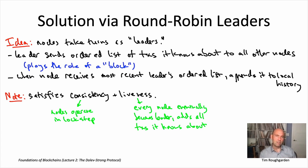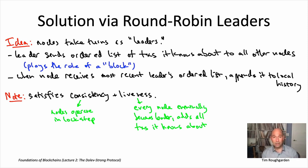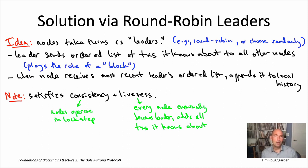In that argument for liveness, that's the point where we really needed there to be a rotating leader. Because maybe not all nodes have heard about a transaction, so we need to take turns so that the node that knows about a transaction has the opportunity to add it to everybody's local histories. It's not like we needed to do round robin specifically — if you just pick a random leader uniformly at random every time step, every node is going to become a leader infinitely often, so we'll eventually get the opportunity to add all transactions it knows about. Random leader selection becomes quite natural once we talk about permissionless protocols and different Sybil resistance mechanisms.